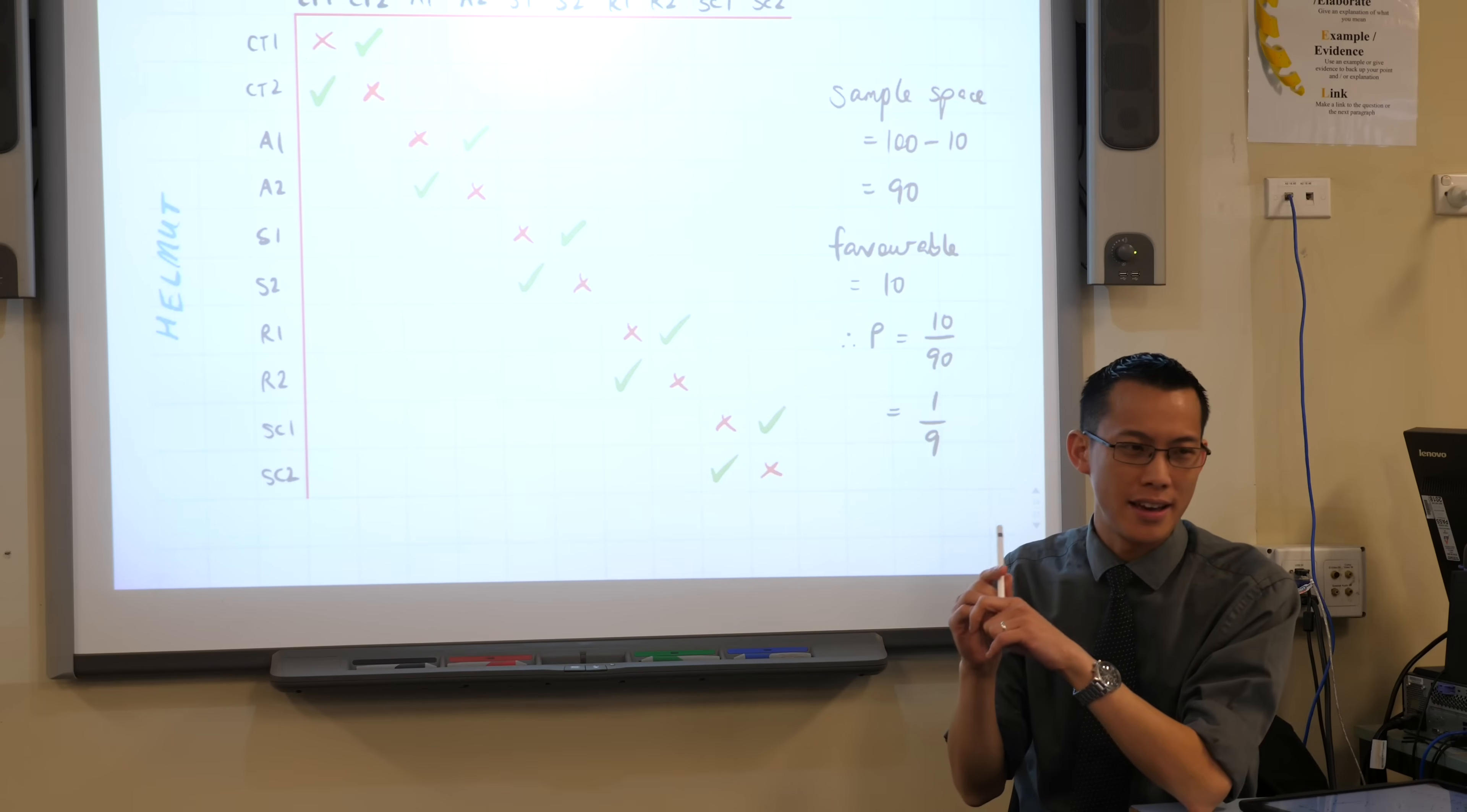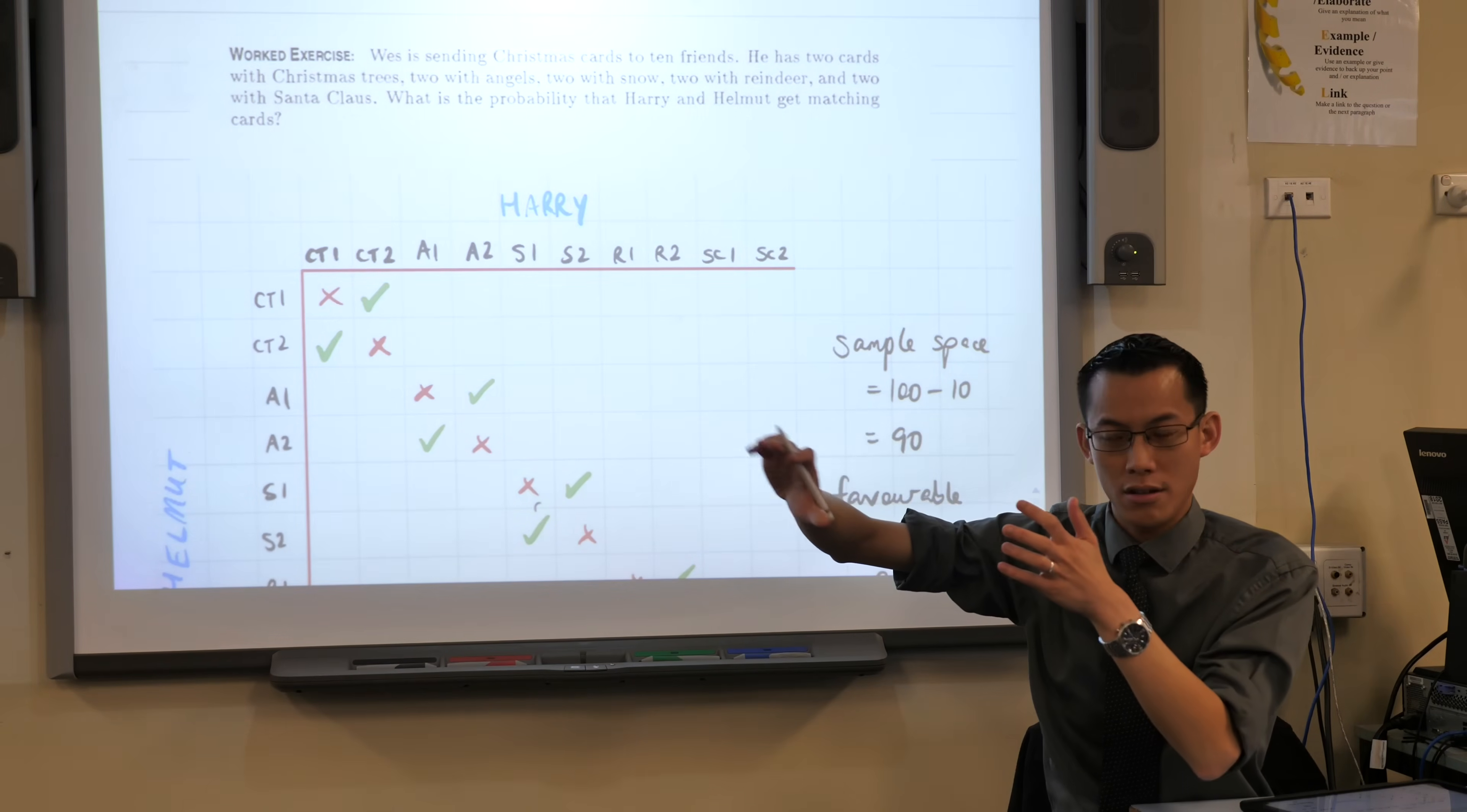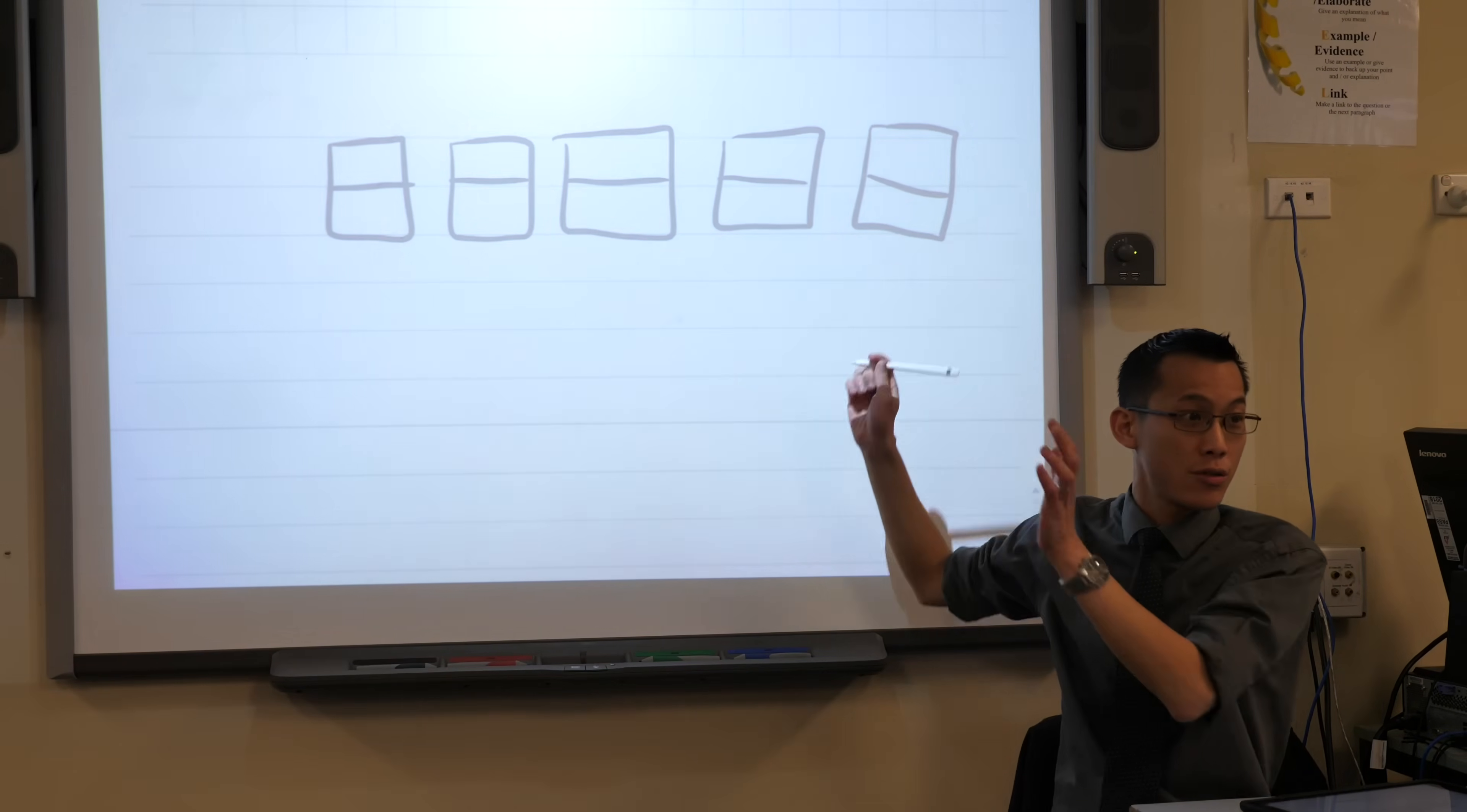But I'm going to go one step further. I can retell this event so that it is not even a multi-stage event. I can reframe it, reword it, so that it's even simpler. Watch. You've got these five pairs of cards. Five pairs of cards. Do you agree that by the time Wes has given out all his cards, two people among his friends will definitely get the same card? And this will happen five times for each of his five different designs. Does that make sense? So I can actually think at the beginning, there will be five pairs of cards. Christmas trees, angels, snow, reindeer, etc.